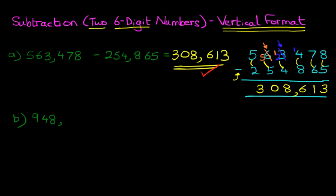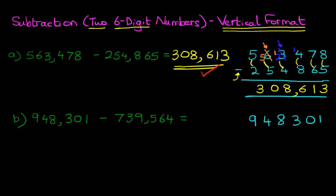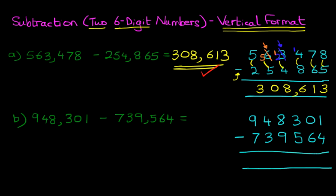This time we have nine hundred and forty-eight thousand three hundred and one, subtract seven hundred and thirty-nine thousand five hundred and sixty-four. Again, the first step is to rewrite the question in nice neat columns. We've got 948,301 subtract 739,564. We are now ready to go ahead and do the subtraction.